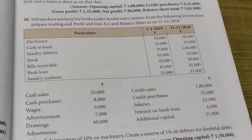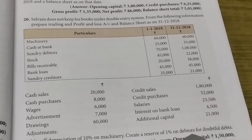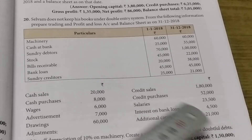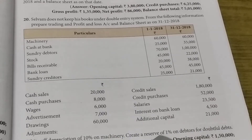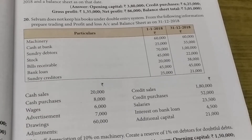Adjustments: write off depreciation at 10% on machinery. Machinery would have 10% depreciation. Create a reserve of 1% on debtors for bad and doubtful debts. Debtors would have 1% provision for bad and doubtful debts. That is the question.